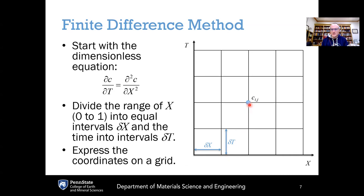We solve by considering a given point on this grid. The concentration c sub ij is the normalized concentration at point (i, j): the first index i is the position index and the second index j is the time index. Increasing i moves to the right on the position axis; increasing j moves forward in time. We also consider the neighboring grid points: c sub (i minus 1, j) is the concentration to the left and c sub (i plus 1, j) is the concentration to the right at the same time. Propagating forward in time corresponds to the point c sub (i, j plus 1).